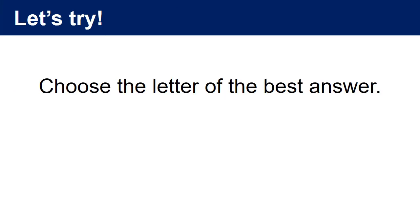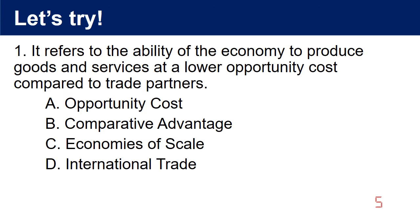Before we proceed to our discussion, let us try to answer the following questions. Question 1: It refers to the ability of the economy to produce goods and services at a lower opportunity cost compared to trade partners. a. Opportunity cost. b. Comparative advantage. c. Economies of scale. d. International trade. The answer is b. Comparative advantage.